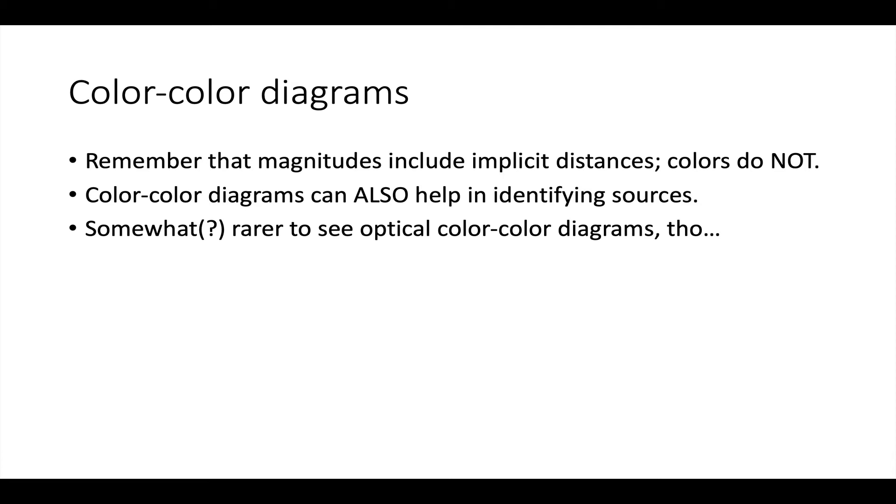Remember that magnitudes include an implicit distance, but colors don't. Color-magnitude diagrams are going to involve distance on the y-axis, but color-color diagrams are going to not have distance involved at all because if you have a color on the x-axis, which is independent of distance and a color on the y-axis, which is independent of distance, then you don't have to worry about distance. Color-color diagrams can therefore also help you in identifying what sources are.